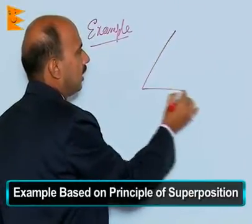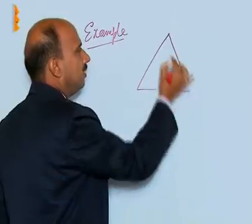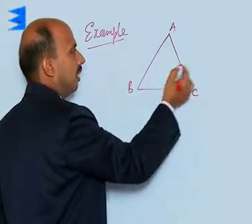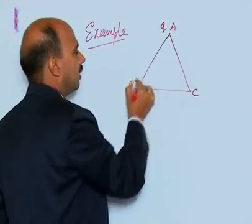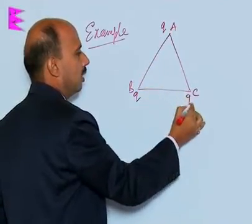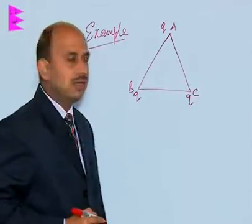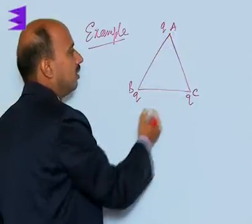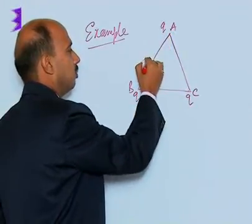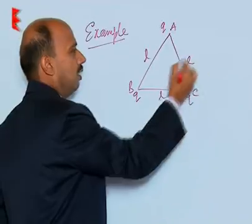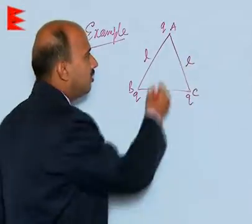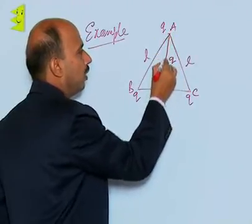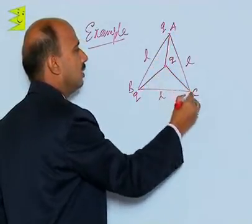Suppose there are three charges placed at the vertices of triangle A, B and C. These are the charges Q, Q and Q, all have the positive sign. Sides of this triangle are suppose L, L and L. There is third charge placed at the centroid, that is Q, we have to calculate net force on this charge.